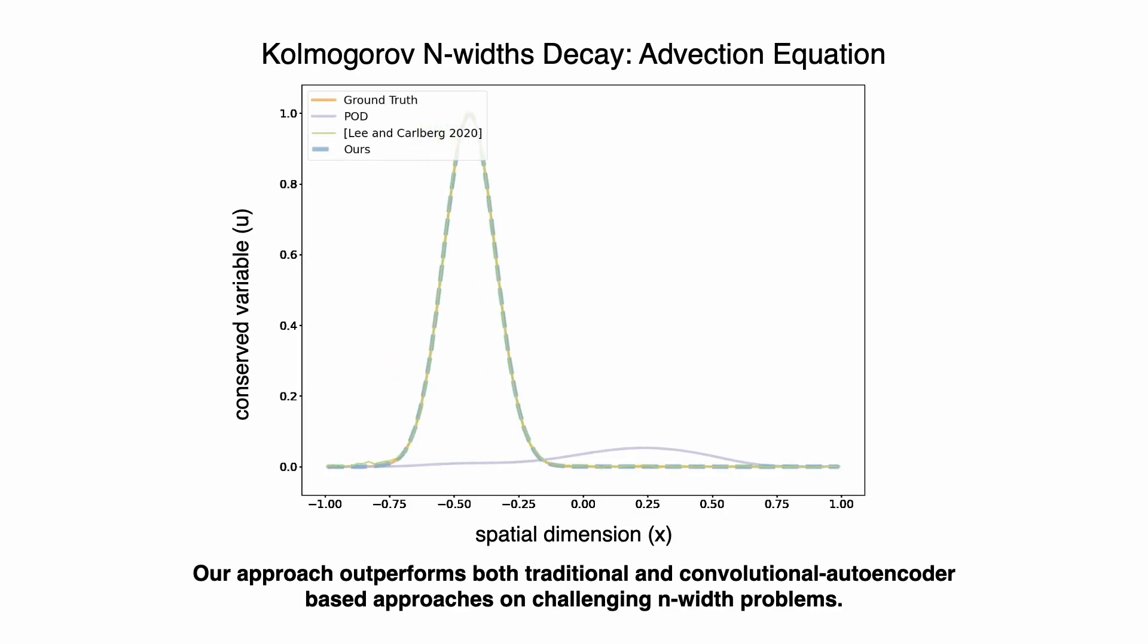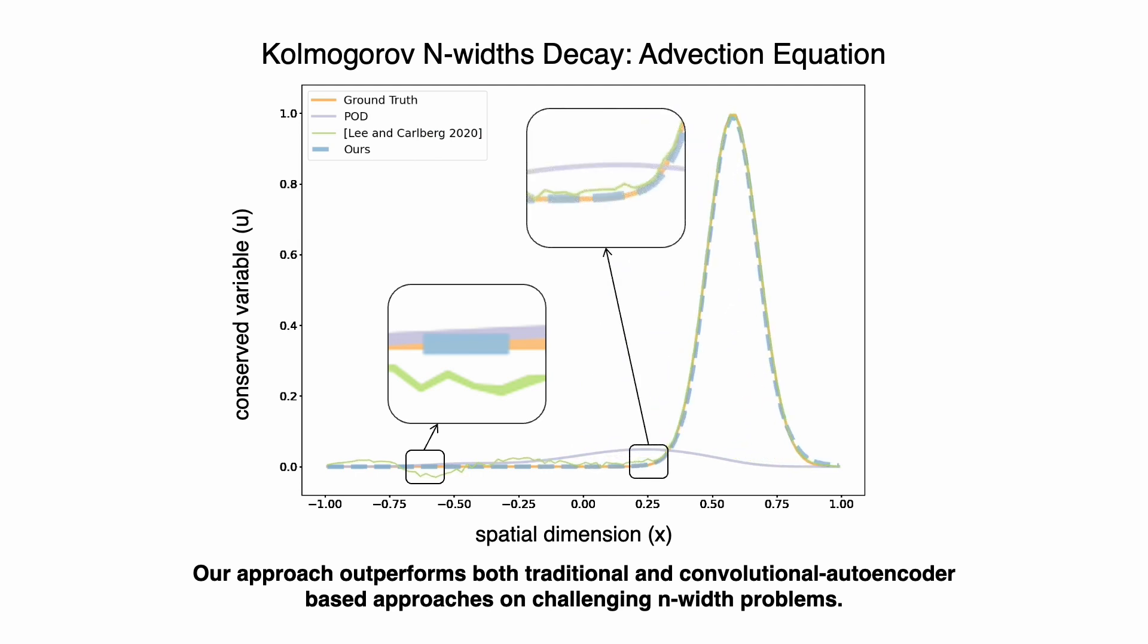Our approach can also handle transport-dominated, slowly decaying Kolmogorov n-width problems that are often difficult to treat with classic model reduction techniques. Here we see the effectiveness of our continuous approach versus other POD and convolutional autoencoder type approaches, in advecting U for a fixed latent space dimension.